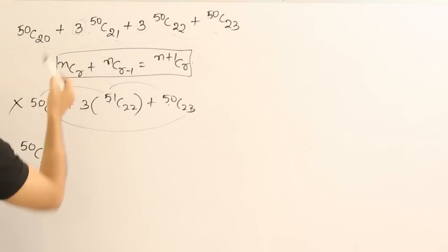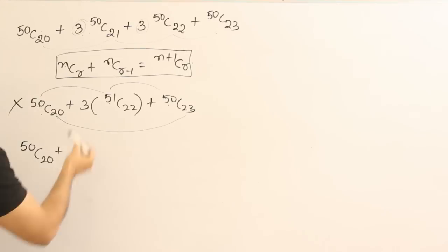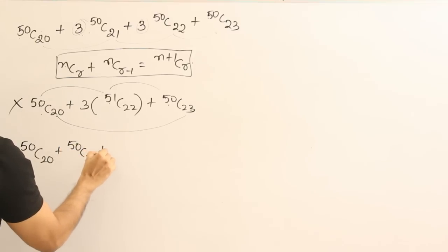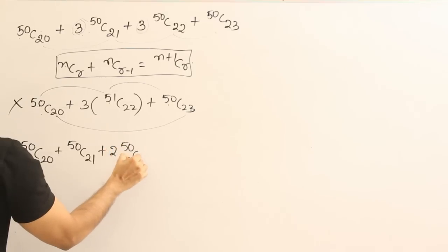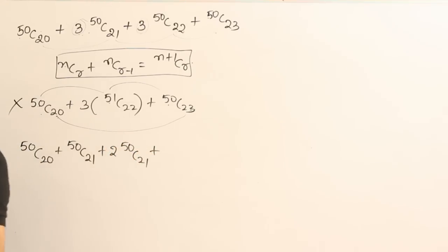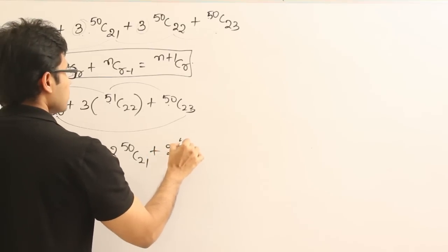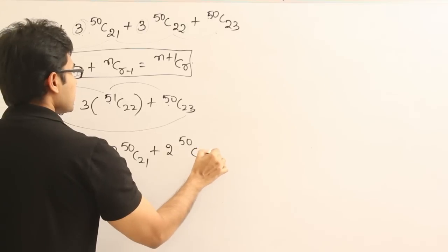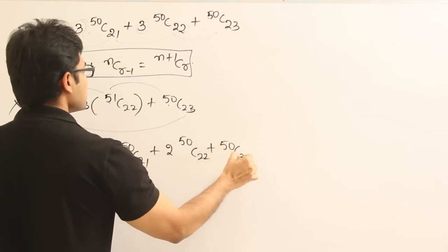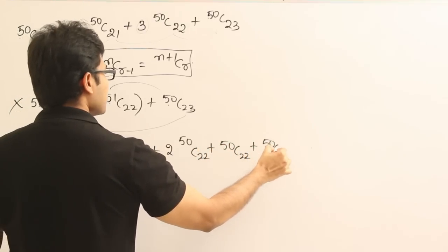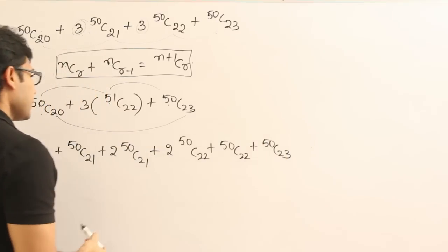And here I am separating it into two terms, this one. So what is it? 50C21 and the other one is 2 into 50C21 plus. Here also I am separating it into two terms. So one is 2 into 50C22 plus 50C22 plus 50C23. Got it?